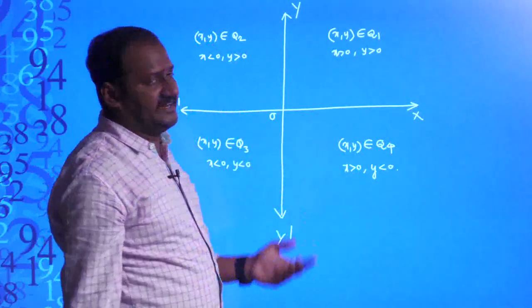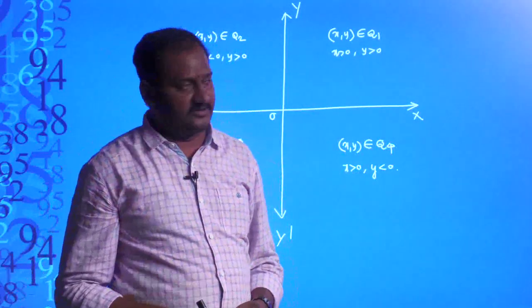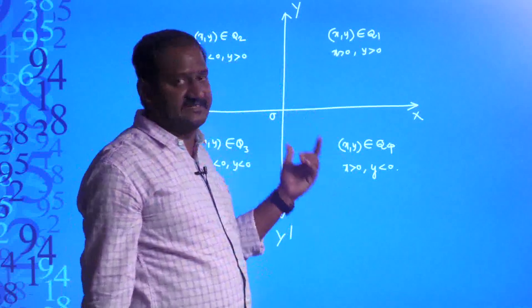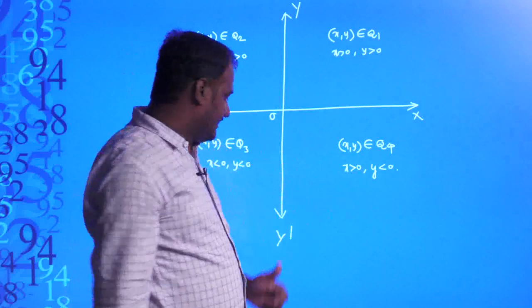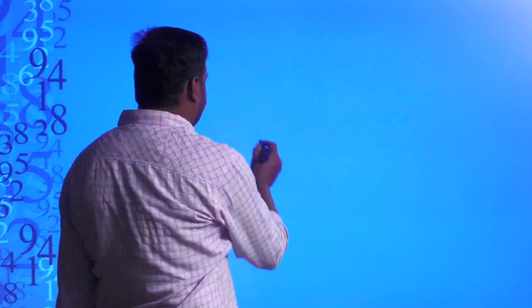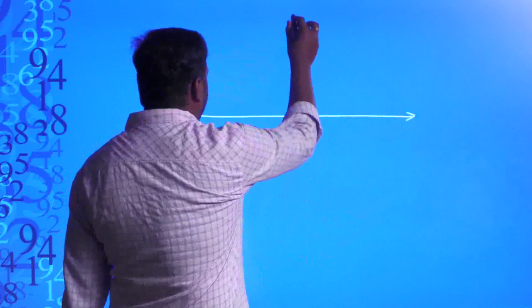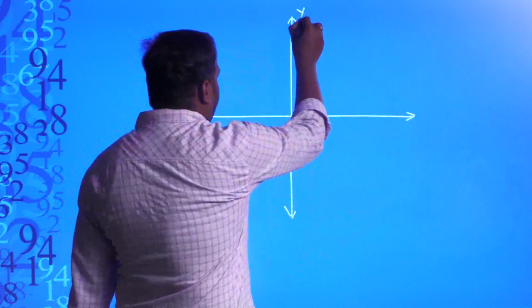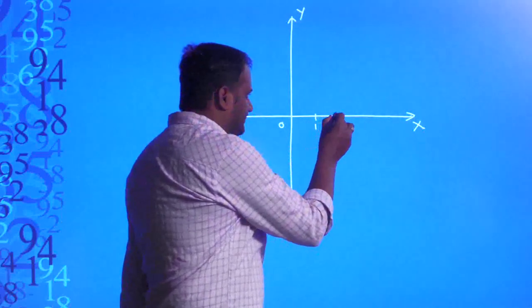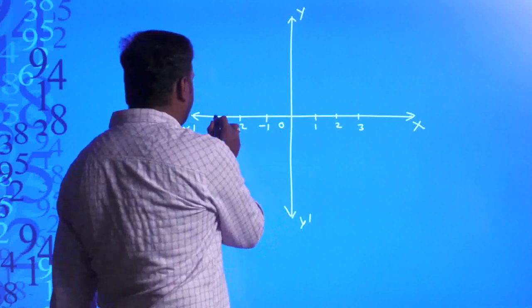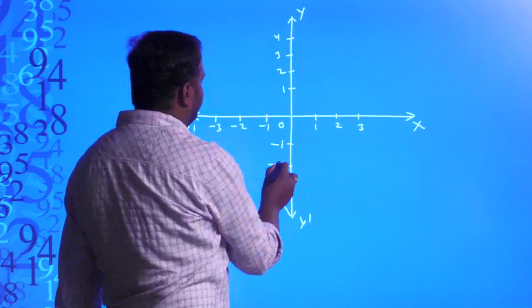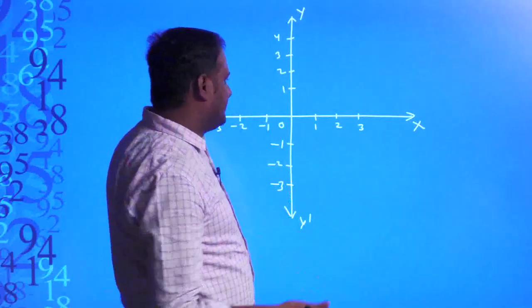Now, suppose my point is on either the x-axis or the y-axis — how do we look at that point? I will draw the x-axis and y-axis again and mark the numbers. On positive x-axis: 1, 2, 3; on negative x-axis: negative 1, negative 2, negative 3. On positive y-axis: 1, 2, 3, 4; on negative y-axis: negative 1, negative 2, negative 3.